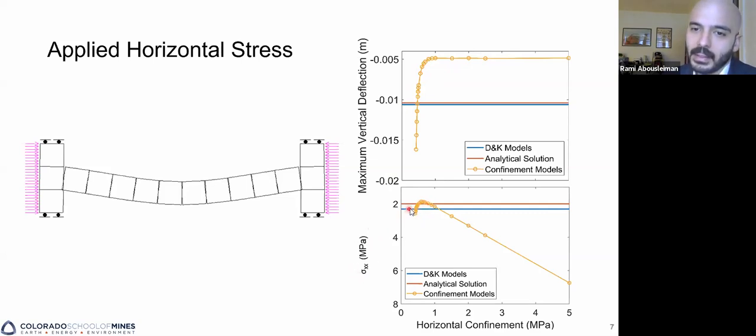The opposite was true with horizontal confinement, with horizontal stress rather. At a certain point when this abutment joint closes, the increase in applied horizontal stress is linear, has a linear relationship with the increase in measured mid-span stress, indicating that there was a simple adjustment to be made to the analytical solution to account for that by just adding the level of applied stress.